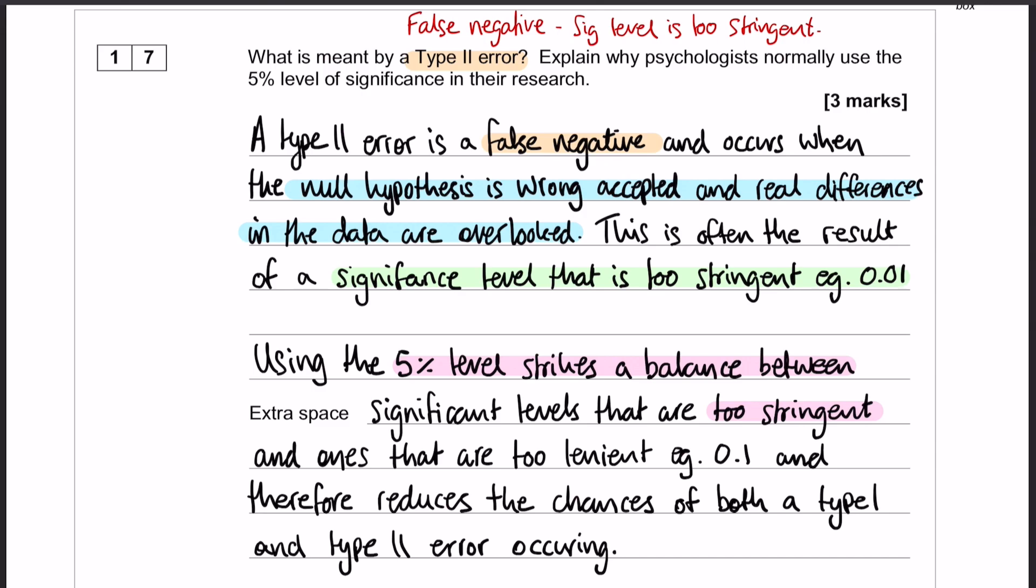Striking that balance means that we are reducing the chances of a Type 1 and a Type 2 error occurring. A Type 1 error is a false positive and a Type 2 error is a false negative. So there are your three marks.